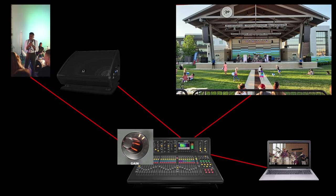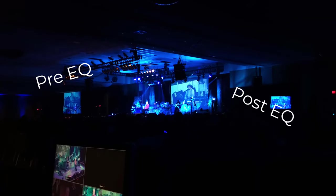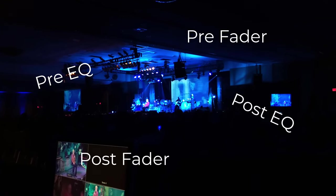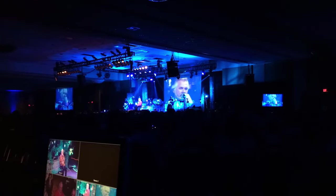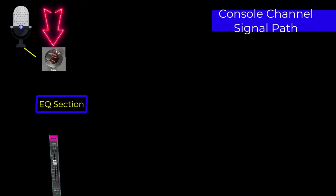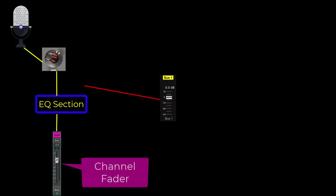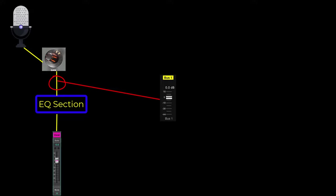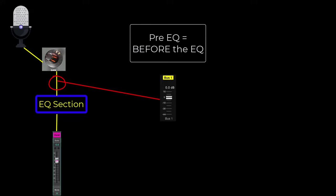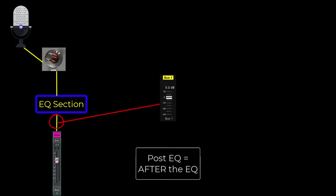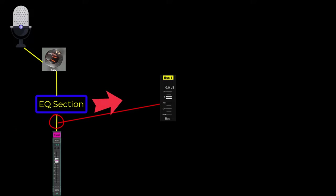Understanding signal flow is how we understand terms like pre EQ and post EQ, pre fader and post fader. In the case of channel sends, these tap point options work like this. This is a very basic outline of the signal path entering a console channel. A pre EQ send would tap the signal before the EQ. A post EQ send would tap the signal after the EQ.